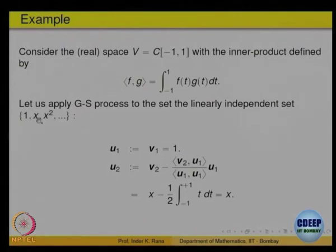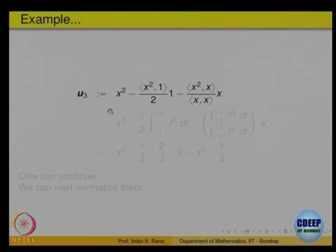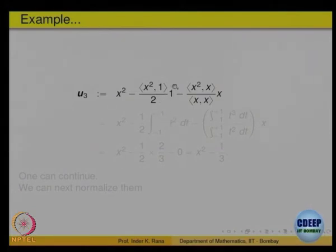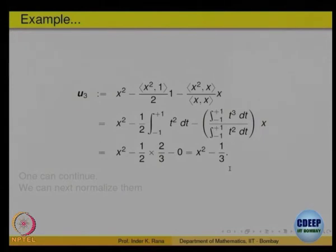Now look at x². What will u3 be? From v3 = x², you remove the projections onto u1 and u2. Write everything in terms of the dot product — that is, the integrals. Simplifying, that comes out to be x² - 1/3. So the Gram-Schmidt process gives u3 = x² - 1/3, and then u1, u2, u3 are perpendicular to each other. You can continue this process further.